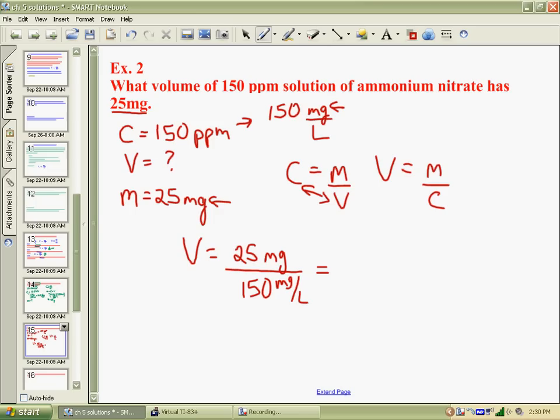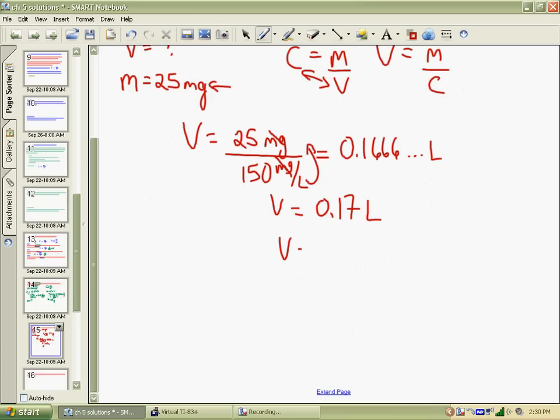So you get 0.1666 repeating for a long time. The milligrams cancel, and this liter is going to come up top, and that would be your answer in liters. So if we were rounding this off to two significant digits, you'd say 0.17 liters is the volume. Which might even be better to write it as 170 milliliters, where you'd multiply by 1,000 and make it a bit more pleasing unit to look at.